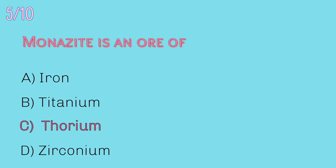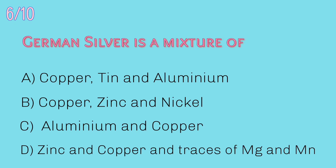Sixth question: German silver is a mixture of — copper, tin and aluminium; copper, zinc and nickel; aluminium and copper; or zinc and copper with traces of Mg and Mn?